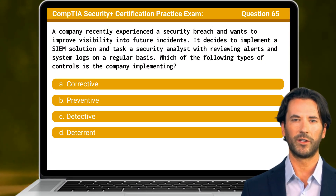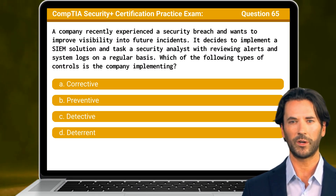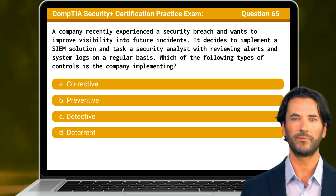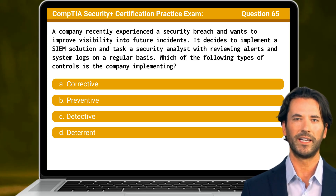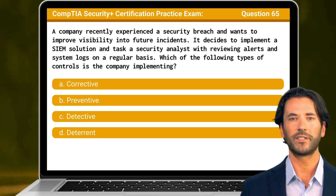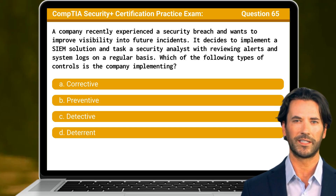Question 65. A company recently experienced a security breach and wants to improve visibility into future incidents. It decides to implement a SIEM solution and task a security analyst with reviewing alerts and system logs on a regular basis. Which of the following types of controls is the company implementing?